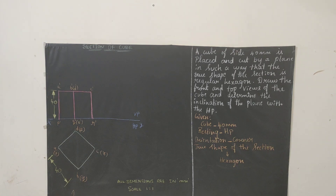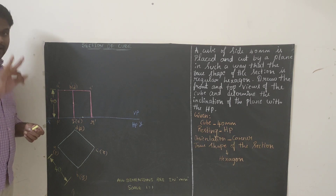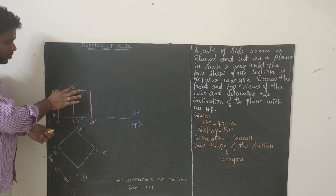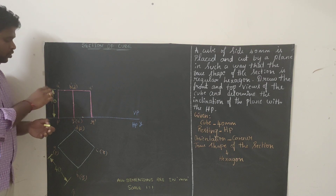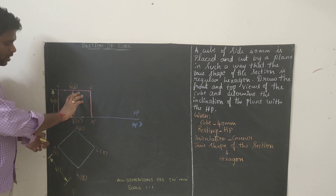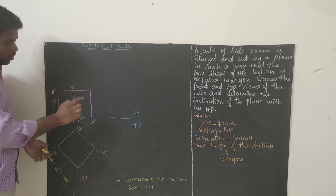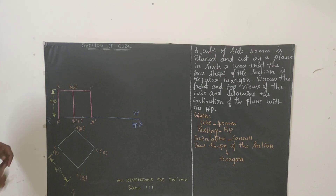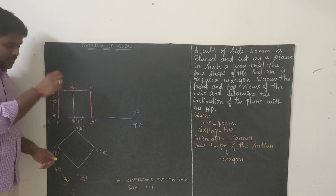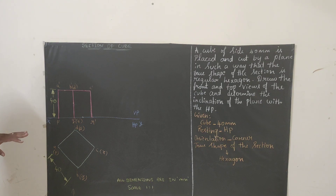We have completed the front view and top view of the cube. Next, we are going to draw the cutting plane. For this sum, here is the hint: you have to bisect three lines. First, bisect A dash to B dash and keep the midpoint. Then bisect B dash to Q dash and keep the midpoint. Then bisect Q dash to R dash and keep the midpoint. Now connect all the points and draw the cutting plane.